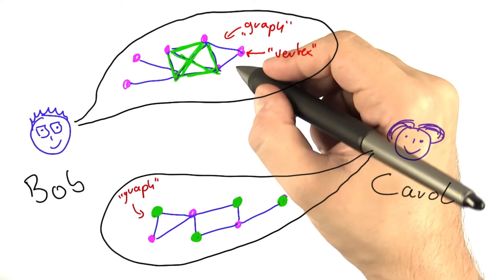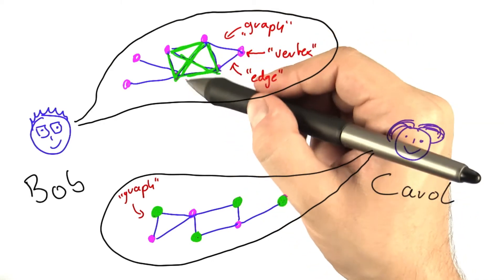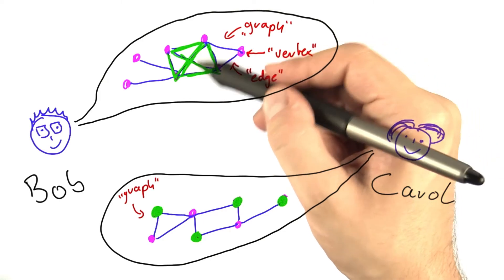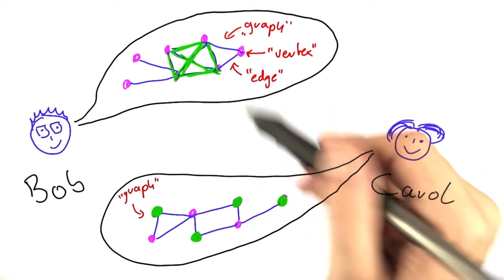And then the connections are called edges. So all of the blue connections or some of those that I've colored green here, every single one of them is an edge. So an edge always connects two vertices and the whole structure is called a graph.